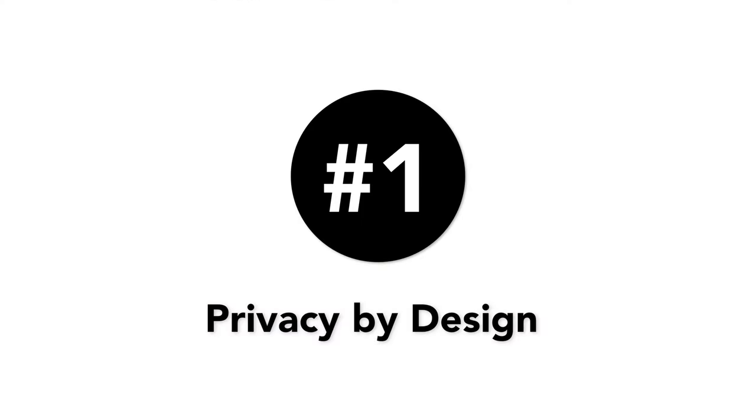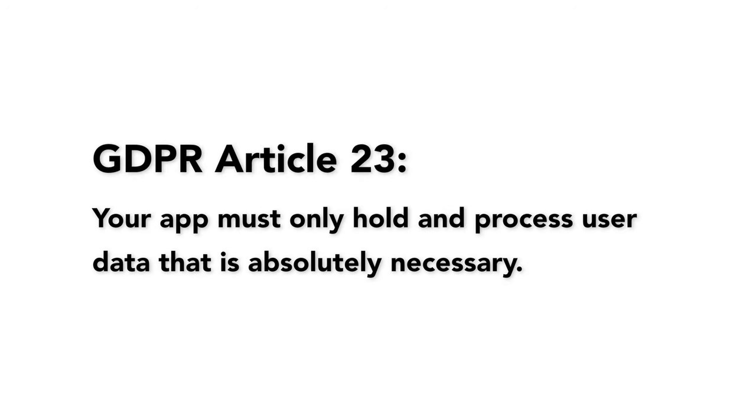Number one is privacy by design. Privacy by design is now a legal requirement under the GDPR. From the moment you start creating your mobile app, you should be considering your user's privacy. According to GDPR Article 23, your app must only hold and process user data that is absolutely necessary. Ask yourself if you really need to collect a user's name and date of birth, because in many cases, one of these fields is enough. You should also encrypt whatever personal data you do collect with a strong encryption algorithm to help minimize the impact of a data breach.